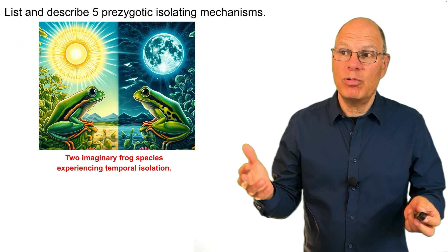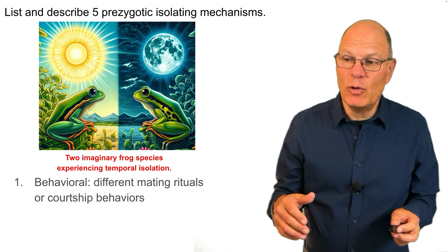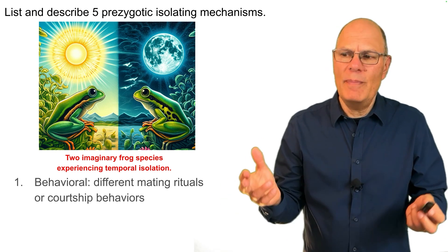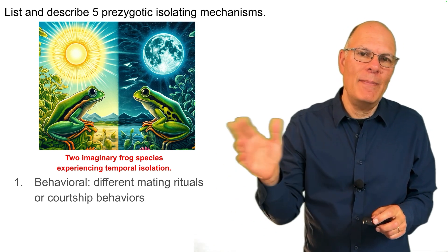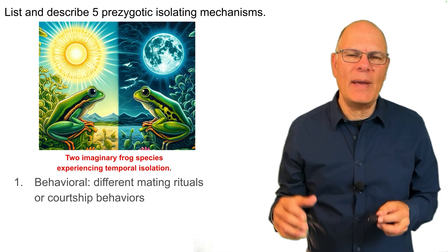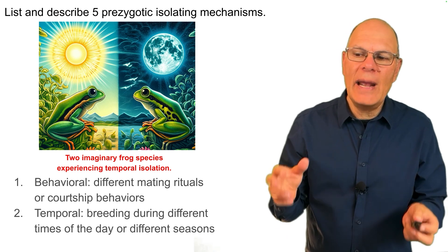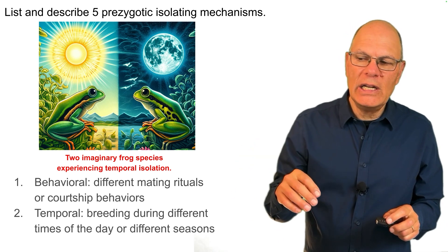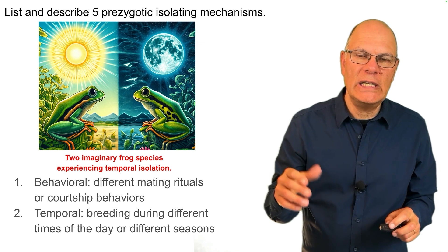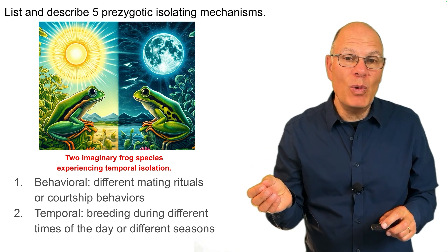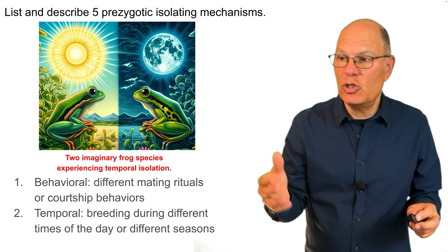Let's look at pre-zygotic isolating mechanisms. The first kind is behavioral: different mating rituals or courtship behaviors would keep a female and a male from accepting one another as members of the same species and mating. Temporal means that they would breed during different times of the day or different seasons — one species mates in the winter, another in the summer, so they're not going to interbreed.